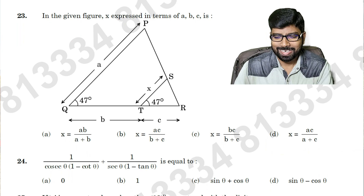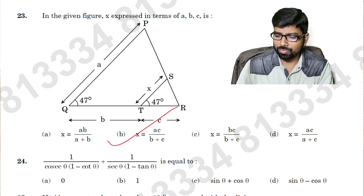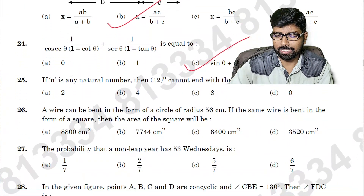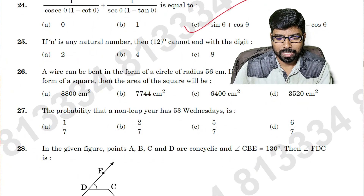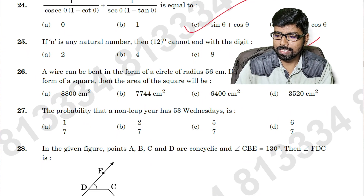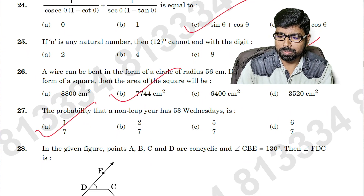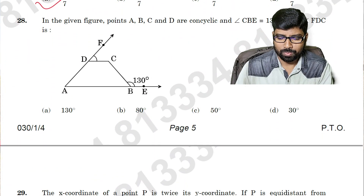Question number twenty-three: option B. Question number twenty-four: option C. I hope my screen is clear to all. Question number twenty-five: option D. Question number twenty-six: option B. Question number twenty-seven: option A. Question number twenty-eight: option C.